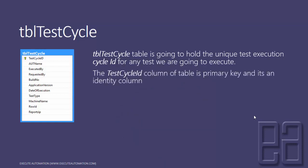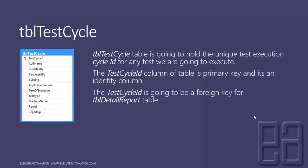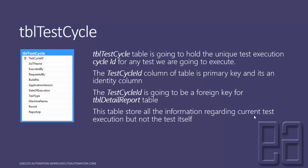The test cycle ID is going to be a foreign key for the TBL Detail Reports table, and you can see there is a relationship between TBL Test Cycle and TBL Detail Reports. This table stores all the information regarding the current test execution, but not the test results themselves. It just stores information regarding the current test execution.